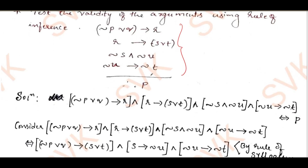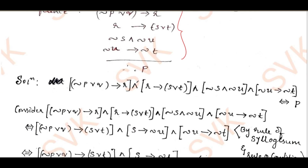Consider the argument and using the definition of inference, we connect all the compound propositions using conjunction. I have taken that, and I need to finally prove that it is logically equivalent to p. For that reason, I will consider the left hand side. Now I will apply rule of syllogism first.